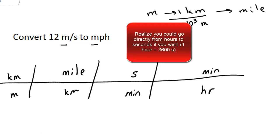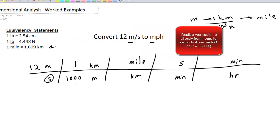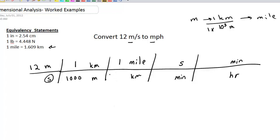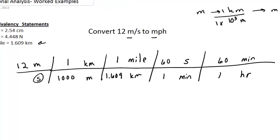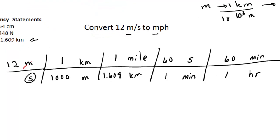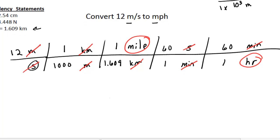I'm going to fill in all my equivalency statements. So 1 kilometer is 1,000 meters. 1 mile is 1.609 kilometers. 60 seconds equals 1 minute. 60 minutes equals 1 hour. I'm going to double check and make sure I didn't make any silly mistakes. Meters cancels with meters, kilometers with kilometers, seconds with seconds, minutes with minutes. I'm left with miles in the numerator and hours in the denominator, which is what I want. So I'm in good shape.